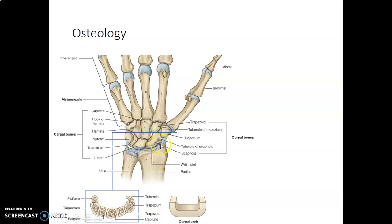It's the radius that really forms the wrist joint and articulates with the carpal bones. The ulna is separated from the triquetrum by an articular disc, so the ulna bone does not border the carpal bones directly.